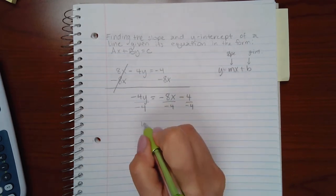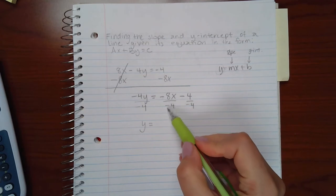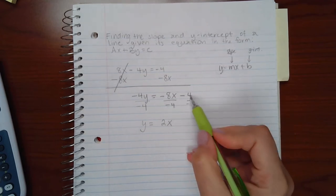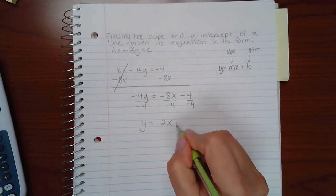So I end up getting y isolated, and negative 8 divided by negative 4 is a positive 2, and negative 4 divided by negative 4 is a positive 1.